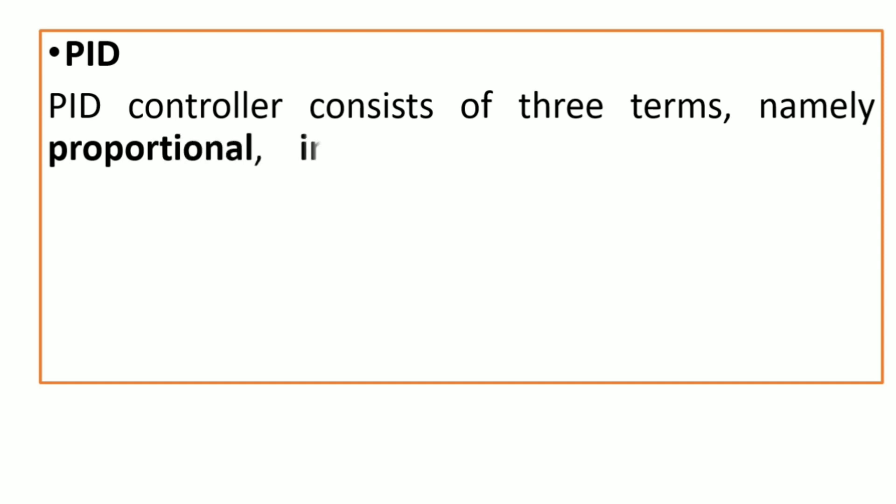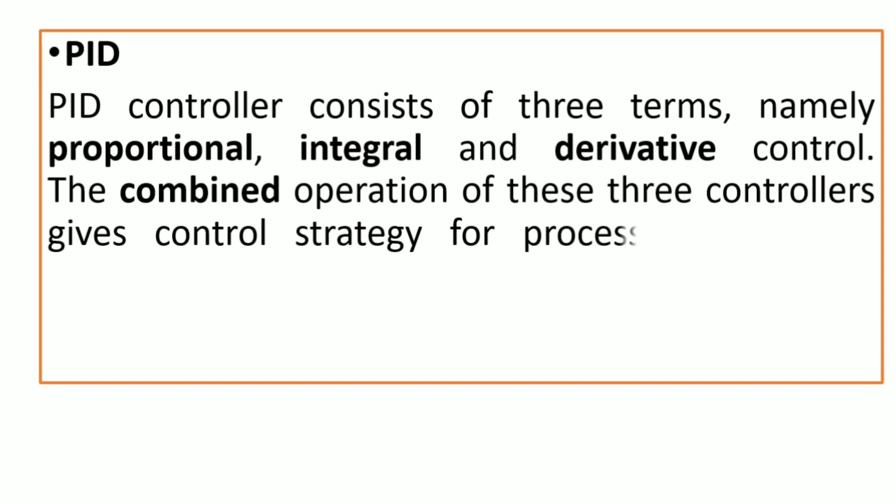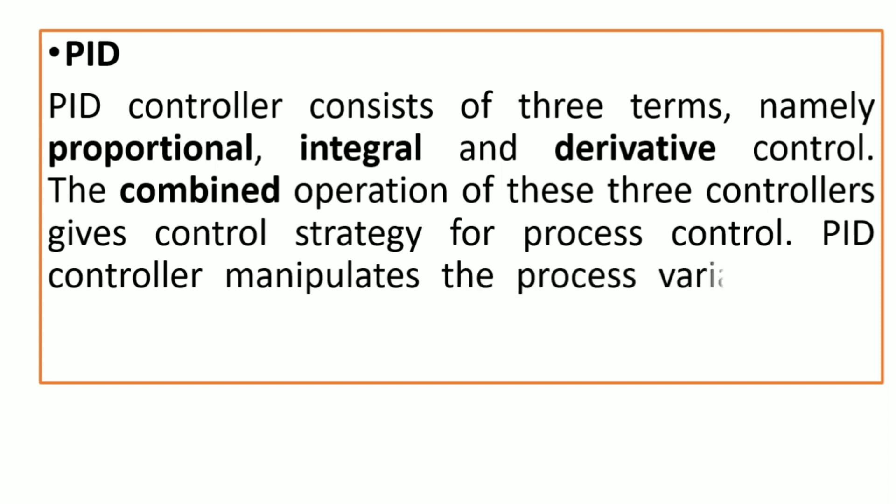PID controller consists of three terms, namely proportional, integral, and derivative control. The combined operation of these three controllers gives the control strategy for process control. PID controller manipulates the process variables like pressure, speed, temperature, flow, etc.